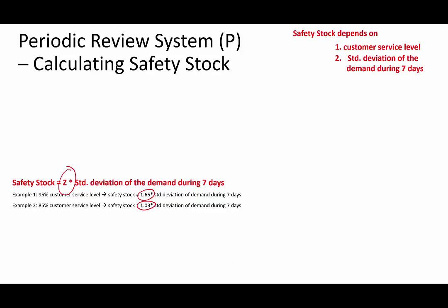You may ask how to calculate the Z-score. You can use the Excel function NORMSINV, which is the inverse of the standard normal distribution and requires only one argument — the probability. In our case, it is simply the customer service level. So for 95%, the Z-score is 1.65, and for 85%, the Z-score is 1.03.